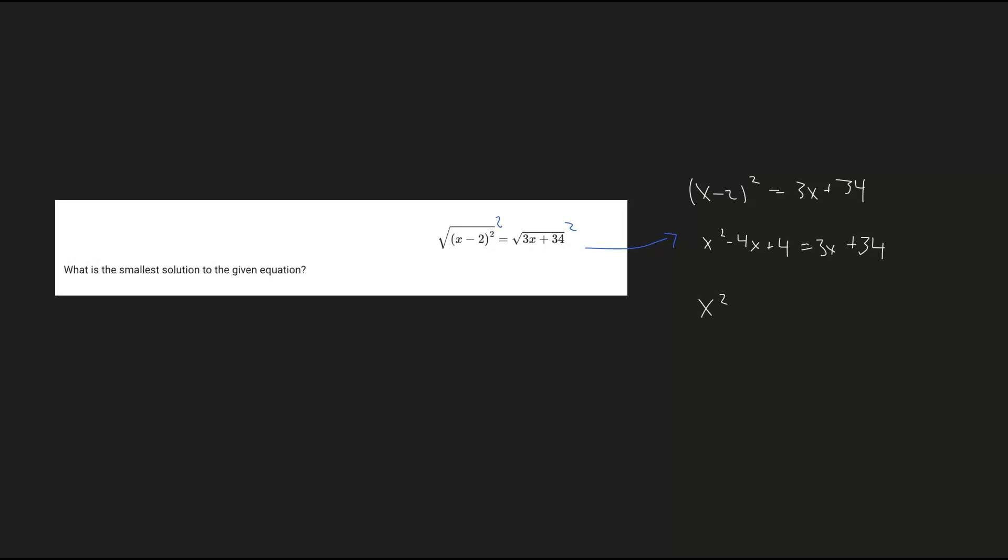We'll get x squared. Negative 4x minus 3x will be negative 7x. And then positive 4 minus 34 will give us negative 30. The important thing here is we want to set this equal to 0.